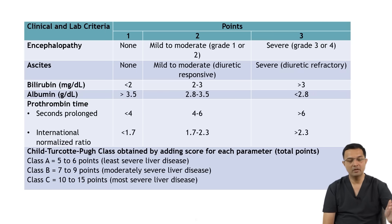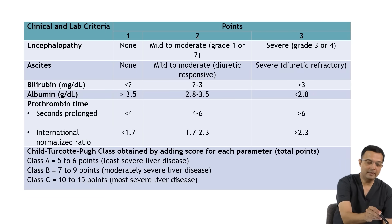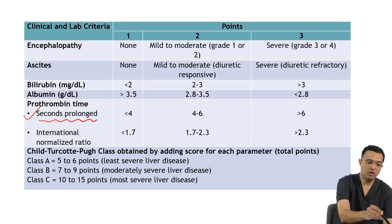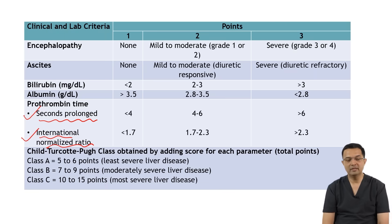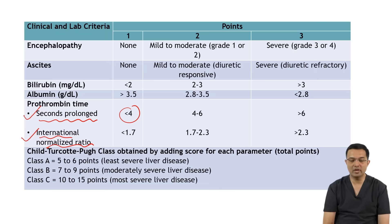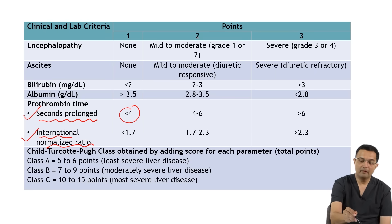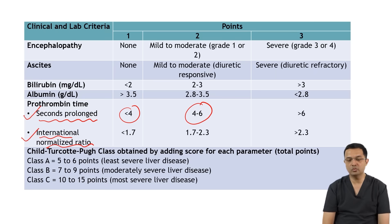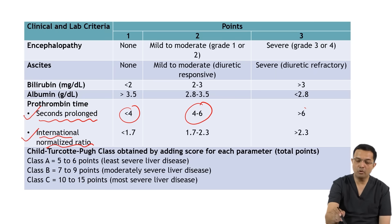For prothrombin time, it can be assessed using seconds prolonged or INR. In this question, they have given seconds prolonged. If it is less than 4 seconds prolonged, then the score is 1; between 4 to 6 seconds, the score is 2; and more than 6 seconds prolonged, the score is 3.